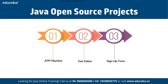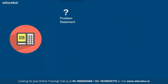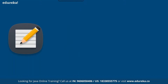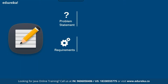Talking about Java open source projects, we have projects like ATM machine, text editor, and sign-up form. For the ATM project, the goal is to make an automated teller machine where users have an account and password, and can withdraw, deposit, and view their account balance. The requirement is core Java, JDK installed, and Eclipse. For the text editor, you create a simple Java editor using JTextArea and JMenuBar, adding JMenu and JMenuItems. All menu items will have action listeners to detect any action. The requirement is Java and Eclipse IDE.